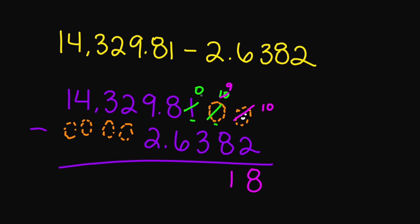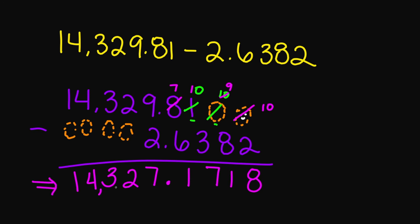0 minus 3 — I'm stuck, I have to borrow. I borrow from this 8, it becomes a 7, and this 0 becomes a 10. 10 minus 3 is 7, 7 minus 6 is 1. Bring that decimal down. 9 minus 2 is 7, 2 minus 0 is 2, 3 minus 0 is 3, 4 minus 0 is 4, and 1 minus 0 is 1. So your final answer is 14,327.1718.